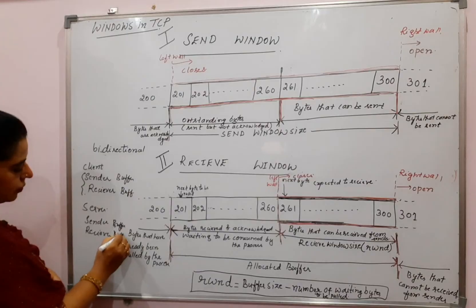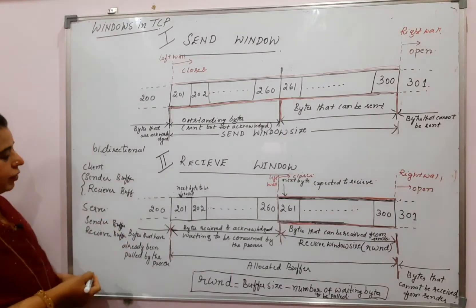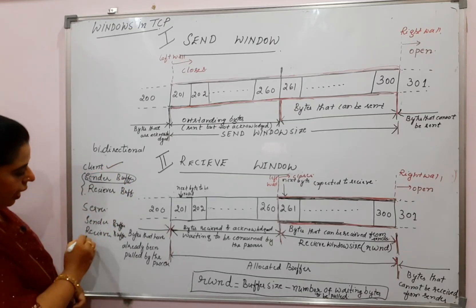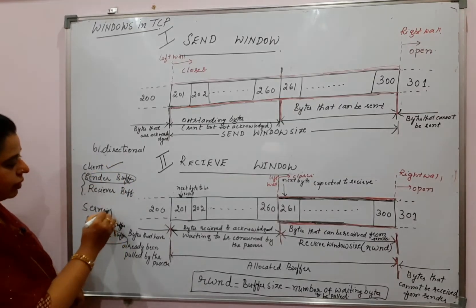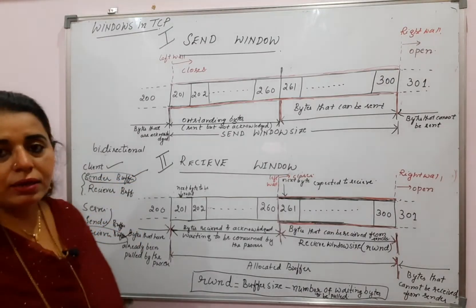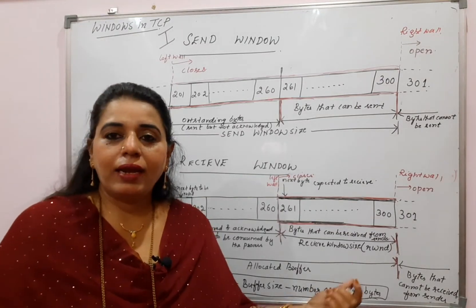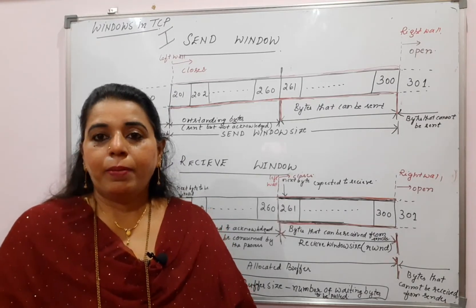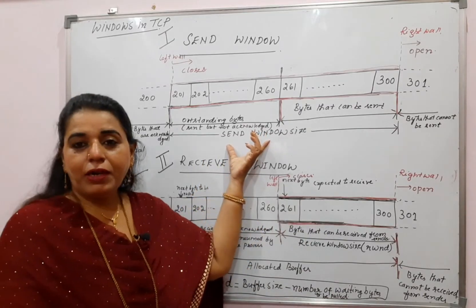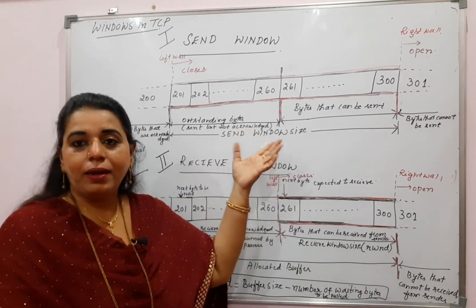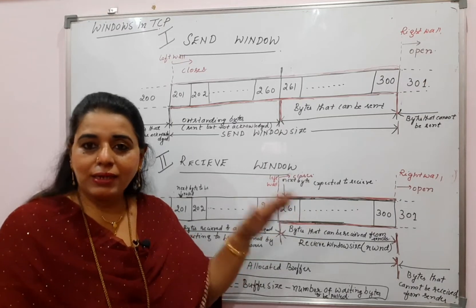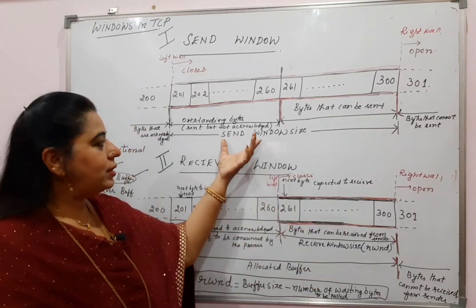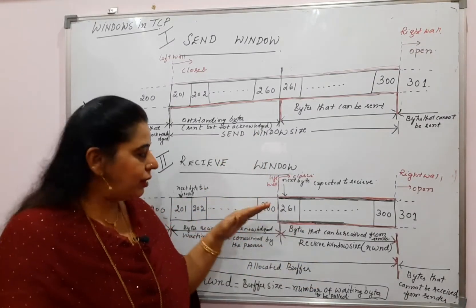To understand the concept of the send window and the receive window, we will take the send buffer — that means the send window from the sender side and the receive window from the receiver side. If we assume unidirectional communication, it is possible for us to understand the concepts for the send window and the receive window. Remember, if it is a send window, it is the window size of the sender, but the sender also has a receive window.